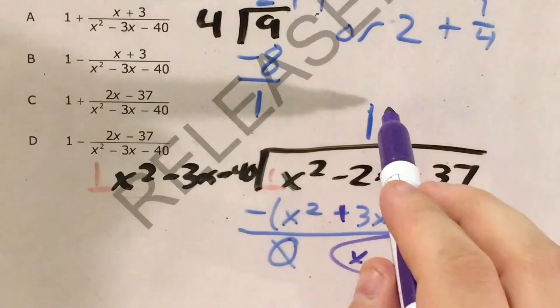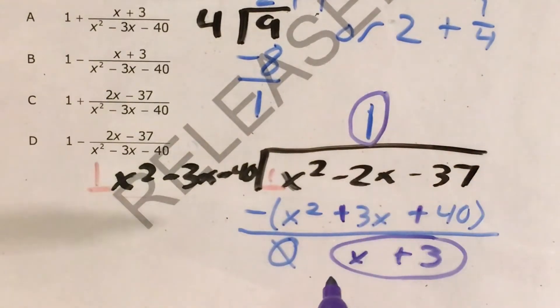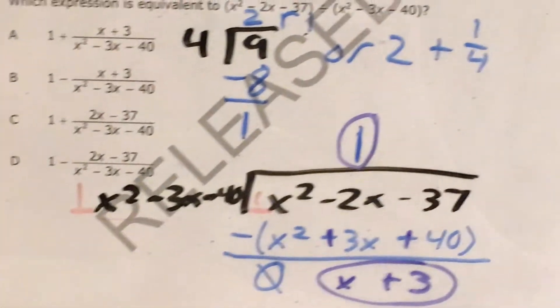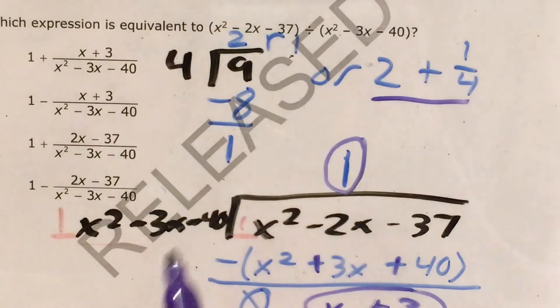So here's my remainder. And here's the number of times my divisor can actually go into my dividend.